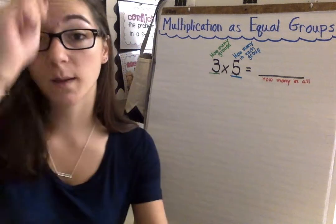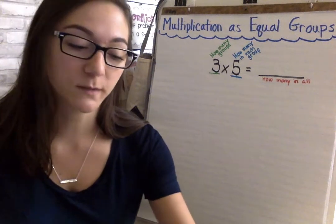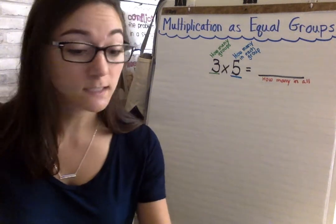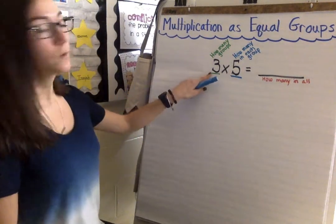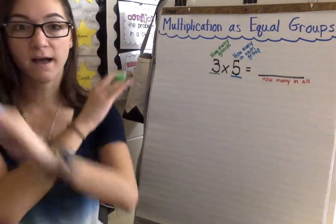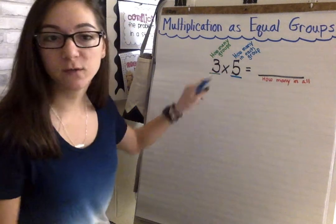Okay so now let's draw a picture because when we are solving a multiplication equation using equal groups it's really helpful to draw a picture. So my three groups of five. Three tells me how many groups to make.